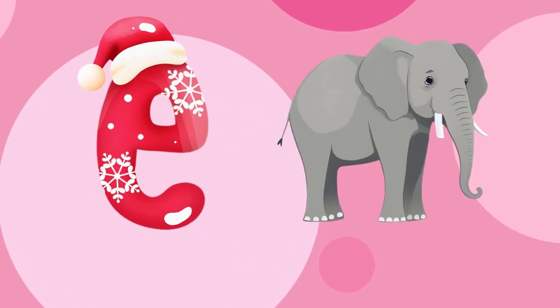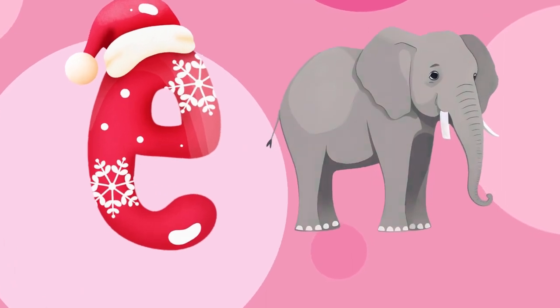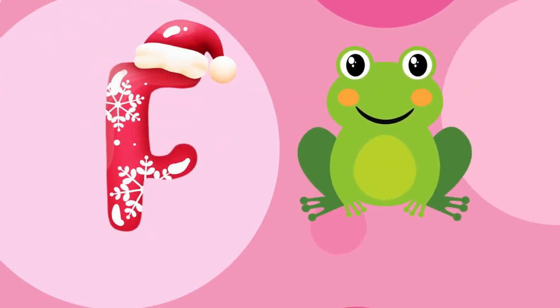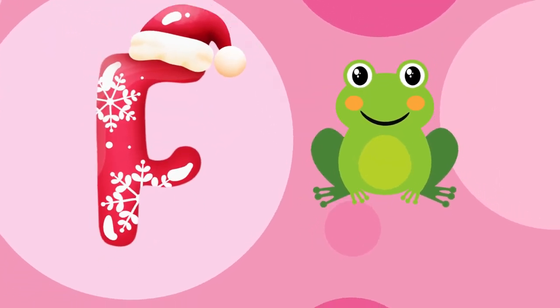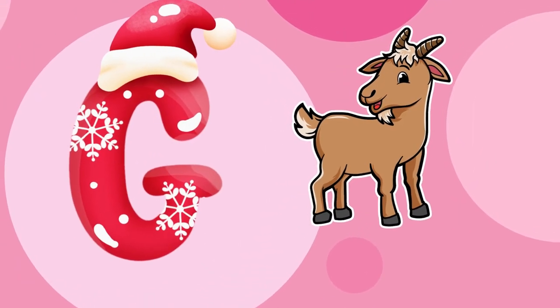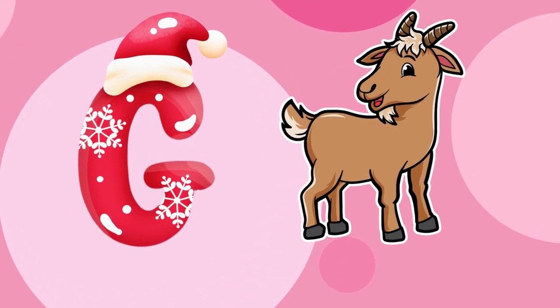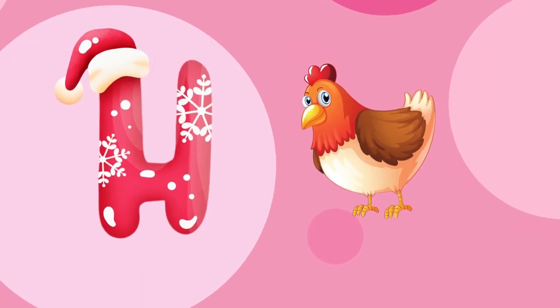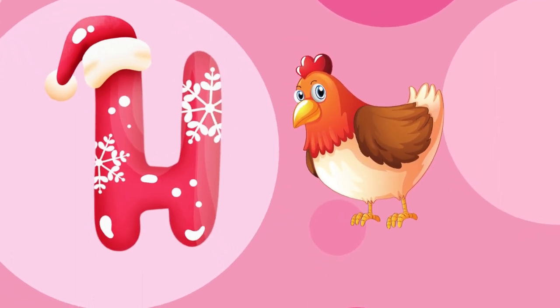E is for elephant, e-e-elephant. F is for frog, p-p-frog. G is for goat, g-g-goat. H is for hand, a-a-hand.